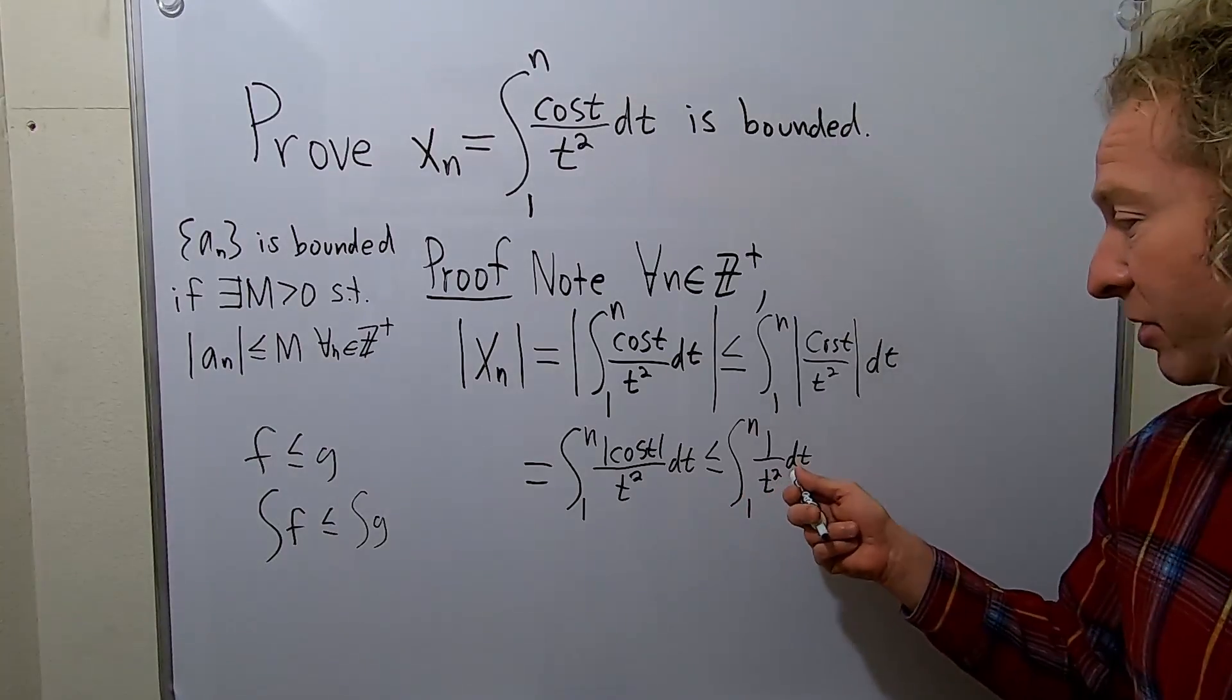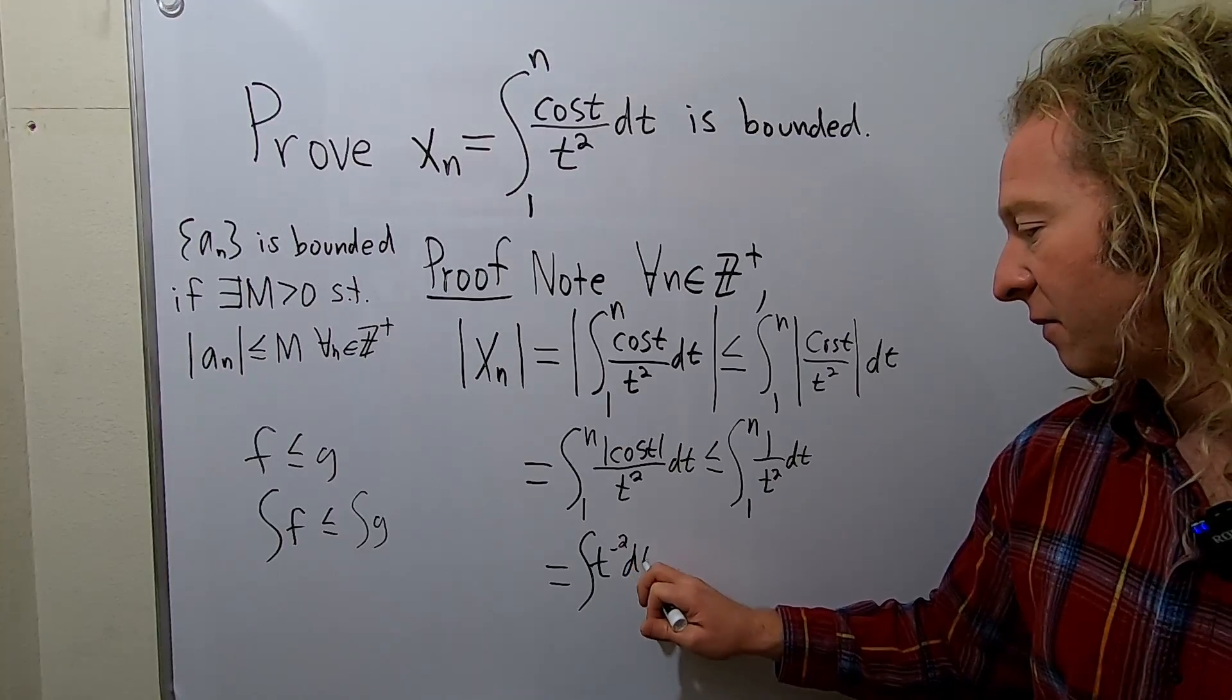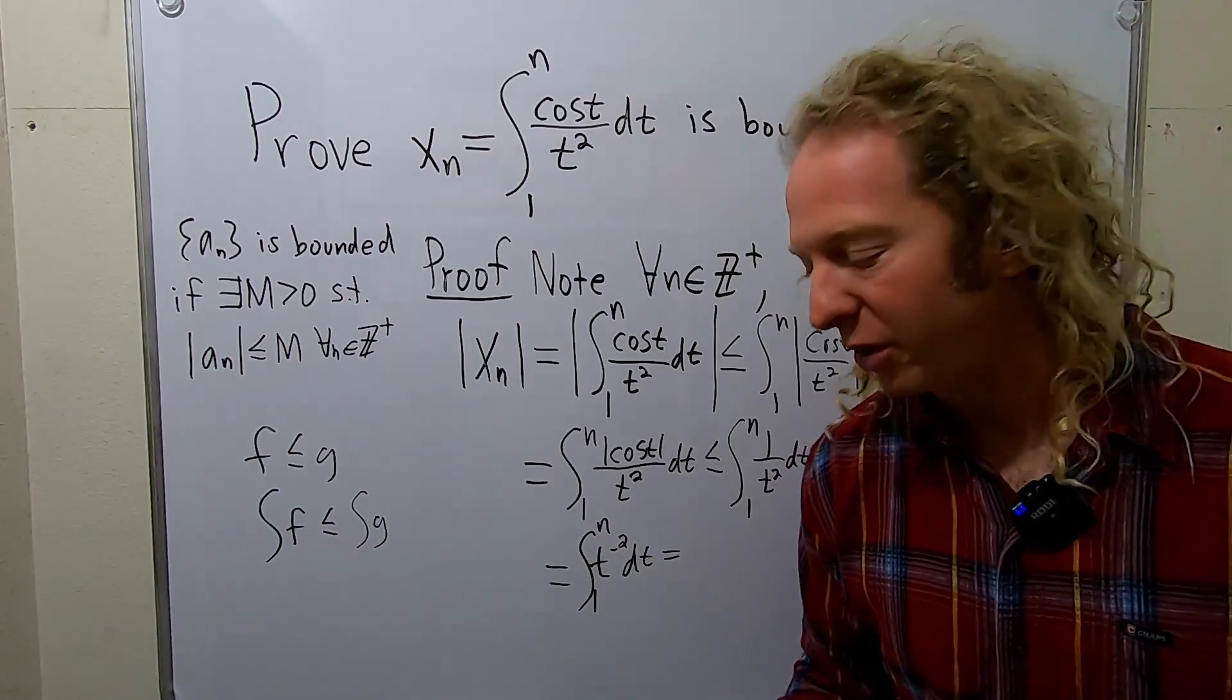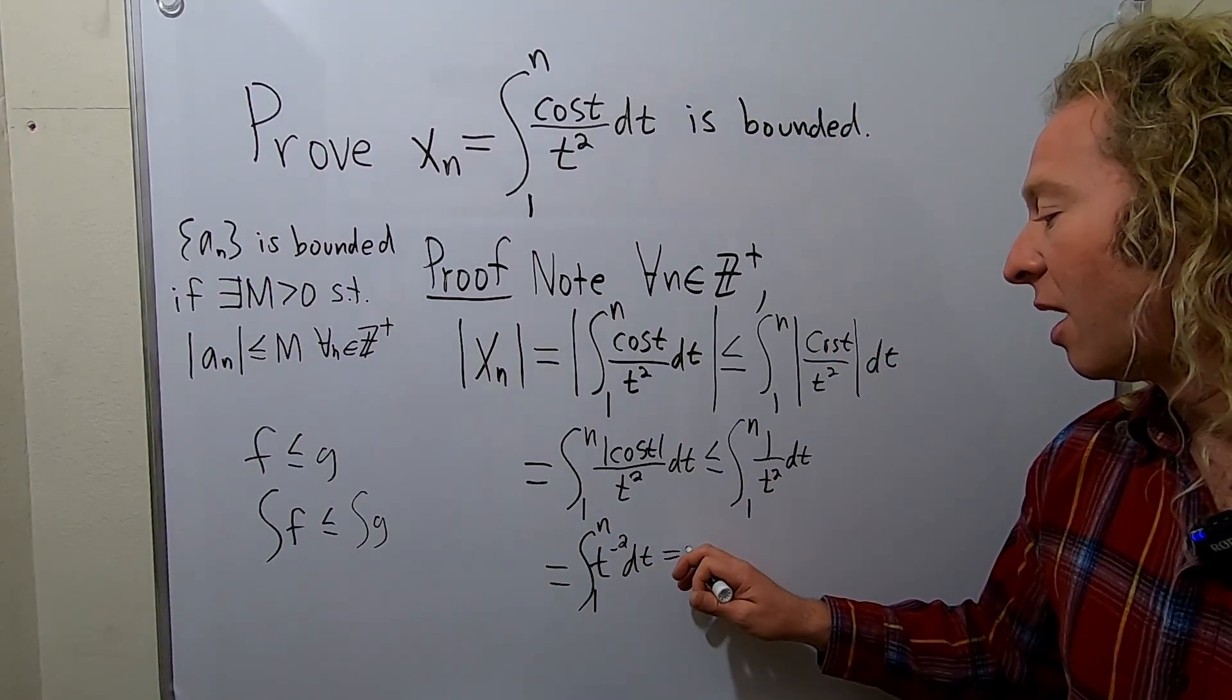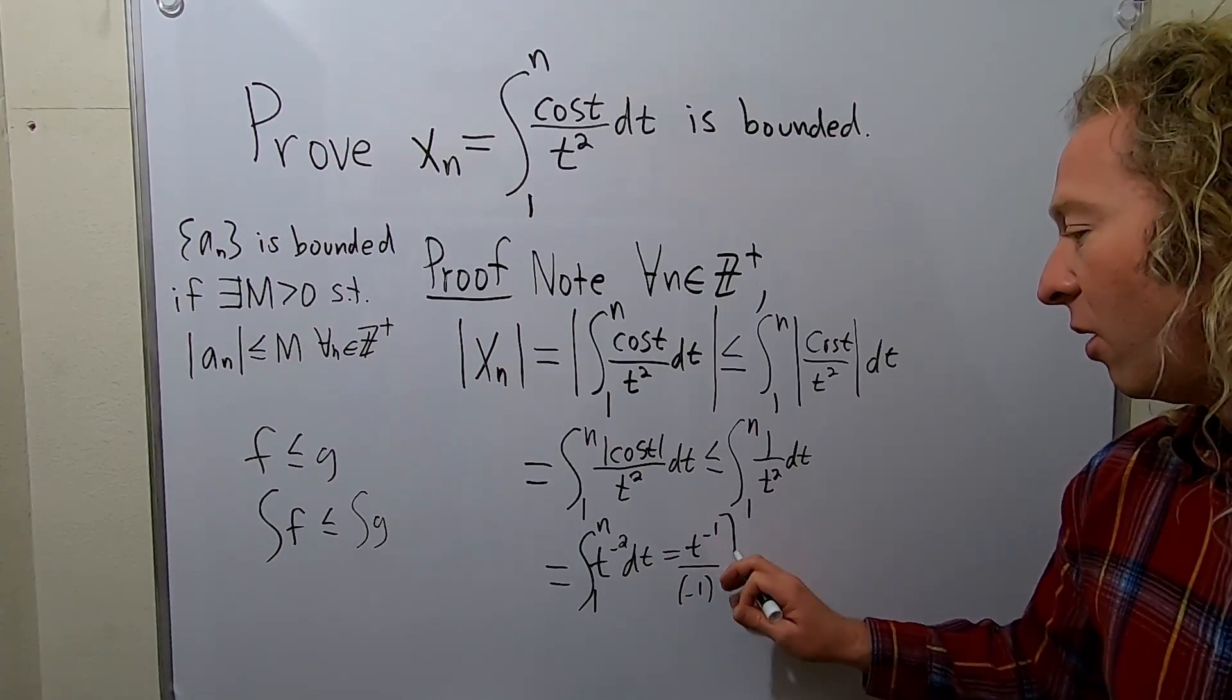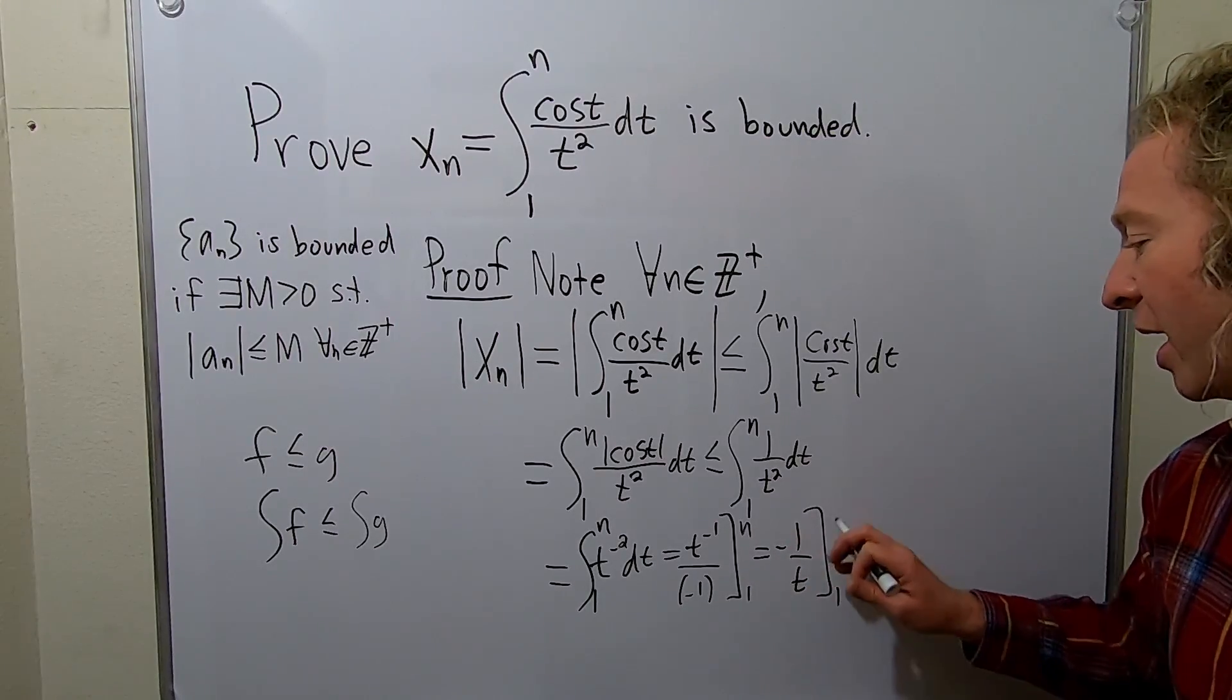We can actually integrate this using some skill. So this is equal to, you can bring it upstairs. This is t to the negative 2 dt, 1 to n. And we can just use the power rule from straight up calculus, right? You add 1 and divide by that. So t to the negative 1 over negative 1. So that's going to be, I'll write it. It's t to the negative 1 over negative 1. And we're going from 1 to n. This is the same thing as negative 1 over t from 1 to n.